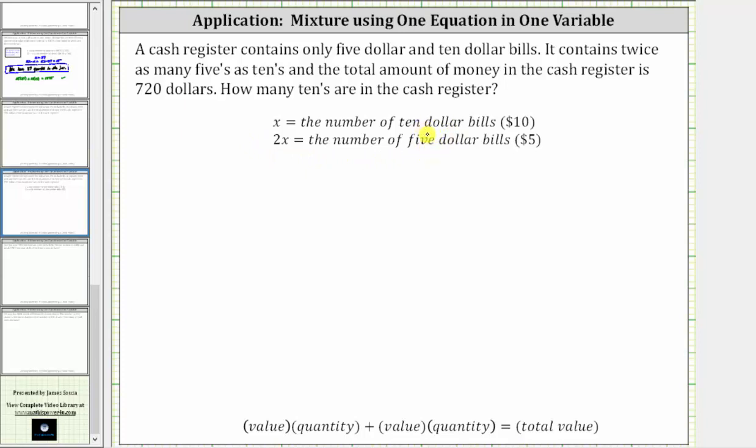Now, because we know the total value is $720, we will write a value equation, which will be the value of a $10 bill times the number of $10 bills, plus the value of a $5 bill times the number of $5 bills, must equal the total value of all of the bills.